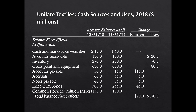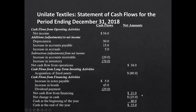How did Unilate pay for these uses? Accounts payable went up $15 million — slowed paying some suppliers, a source of cash. Accruals went up $5 million (like accrued payroll). Notes payable increased $5 million — short-term borrowing. And $45 million of new long-term bonds were issued. Total sources from borrowing were $70 million, netting to $100 million of net uses of cash across all activities.